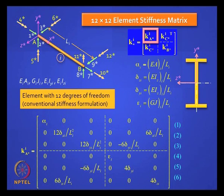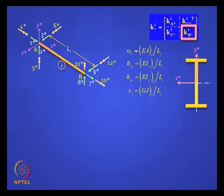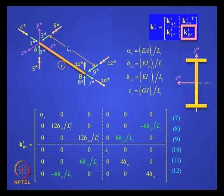We can now write down K_A*. Next, let us move on to K_B*. Will it look like K_A*? You are shifting to the end node, dealing with coordinates 7, 8, 9, 10, 11, 12. Axial stiffness - no change. Torsional stiffness - no change. For beam stiffness: shear will get reversed, but moments will not. So the 6EI/L² value has an opposite sign to that assigned in K_A*, while diagonal elements are always positive.